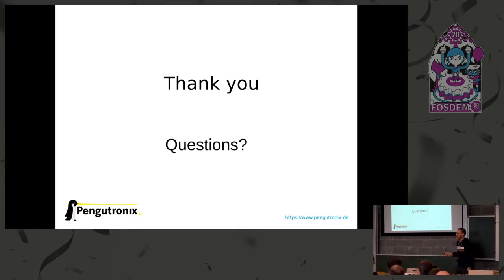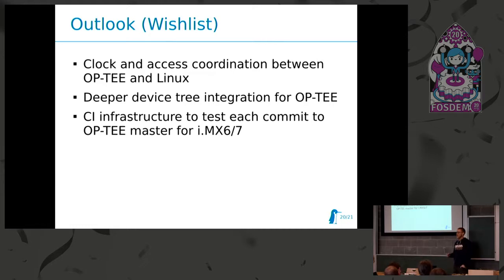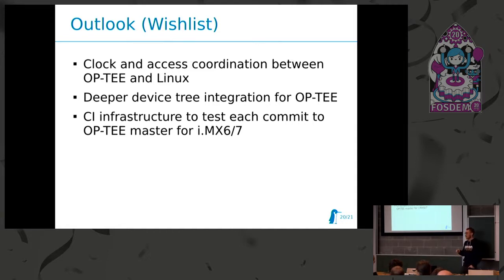Q: Related to access coordination between OPTI and Linux — you talked about firewalls for the DDR, but is there also provision to protect other peripherals? A: For IMX6 platforms there's only the DDR firewall, but STM platforms have a more advanced method of assigning peripherals to the secure or normal world or a small Cortex co-processor. I believe there's a framework being discussed on how to coordinate this.